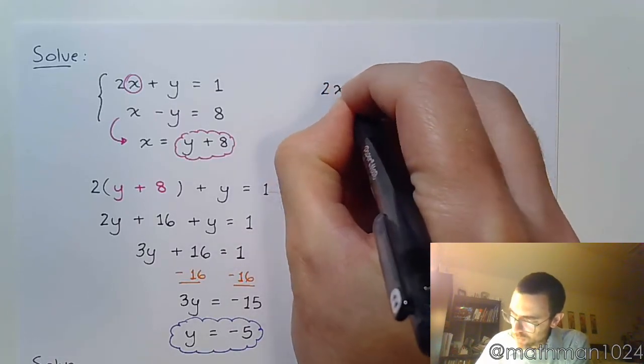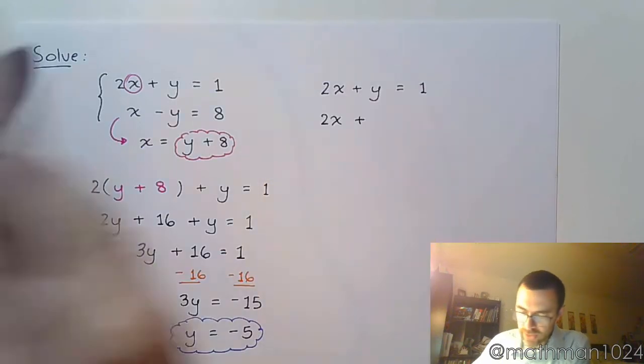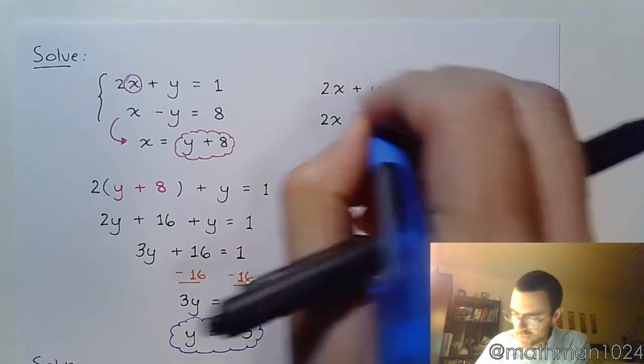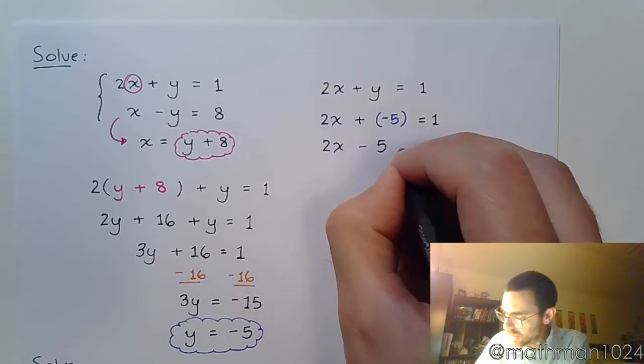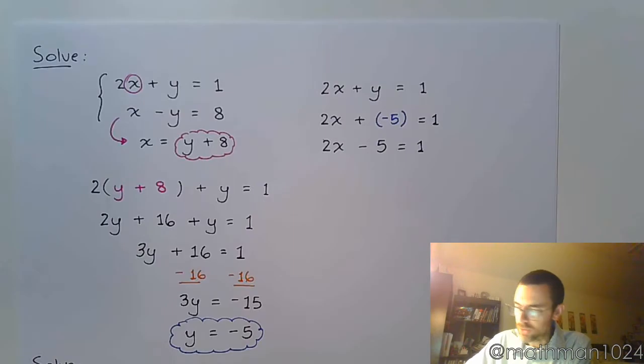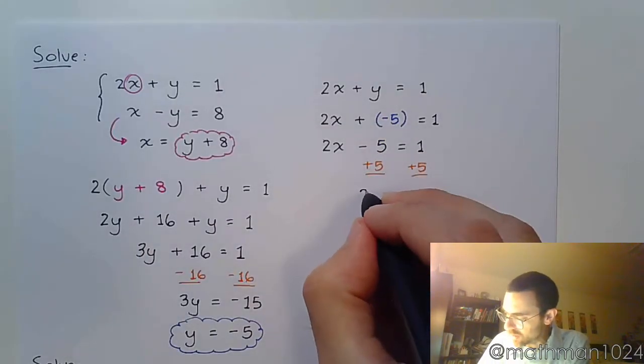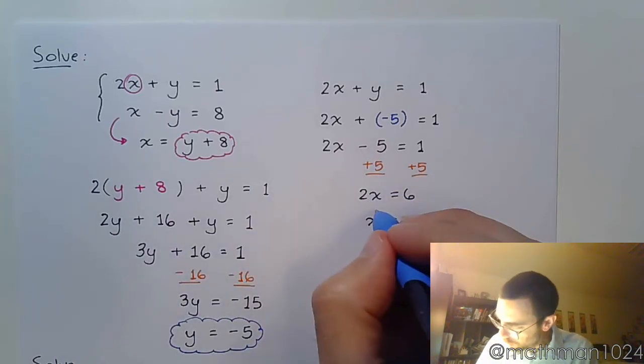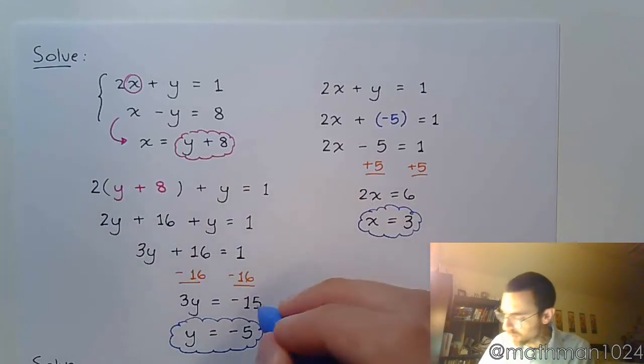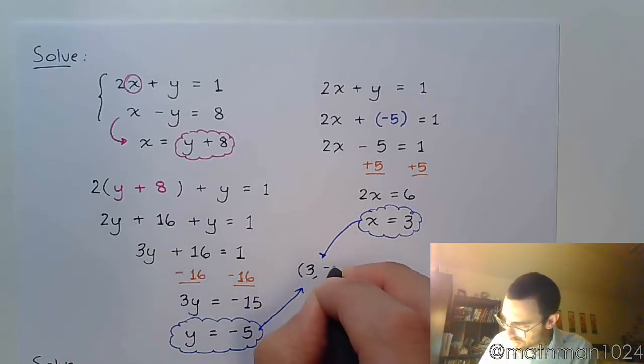So let's do that up here. It doesn't really matter which one you choose. So I'm going to say 2X plus Y equals 1. So then 2X plus, use my parentheses here, negative 5 equals 1. I'm just taking extra precautions here because I don't want to make a mistake. Add 5 on both sides. 2X equals 6. Divide both sides by 2. And we get that X is equal to 3. So putting these two guys together tells me that my solution is the ordered pair 3, negative 5.